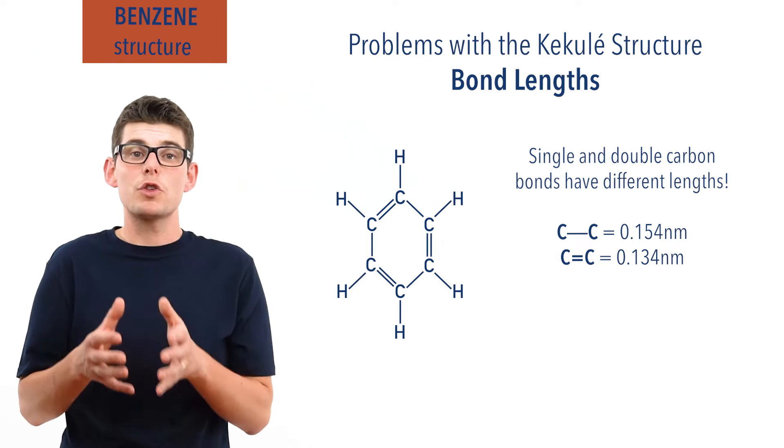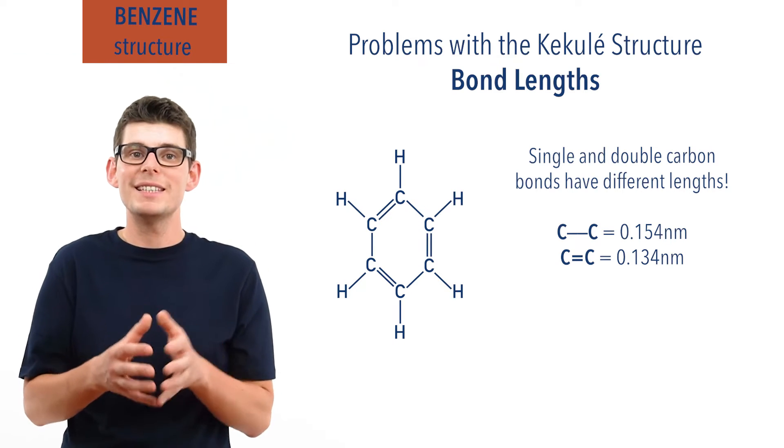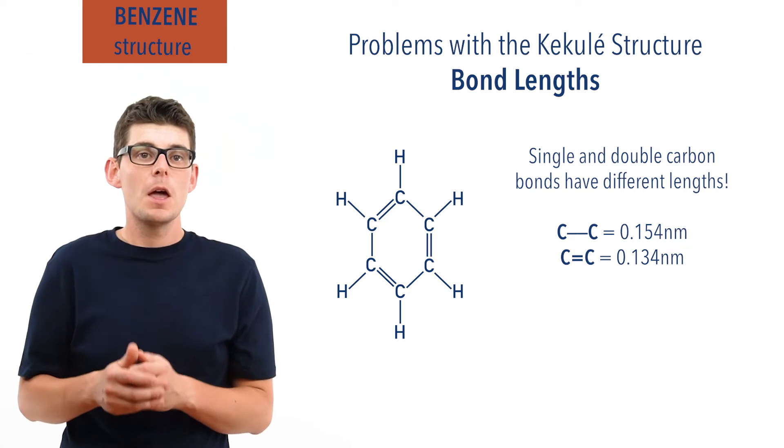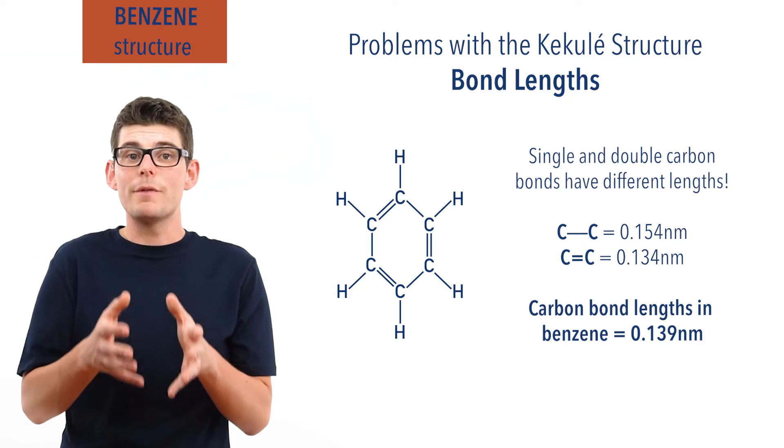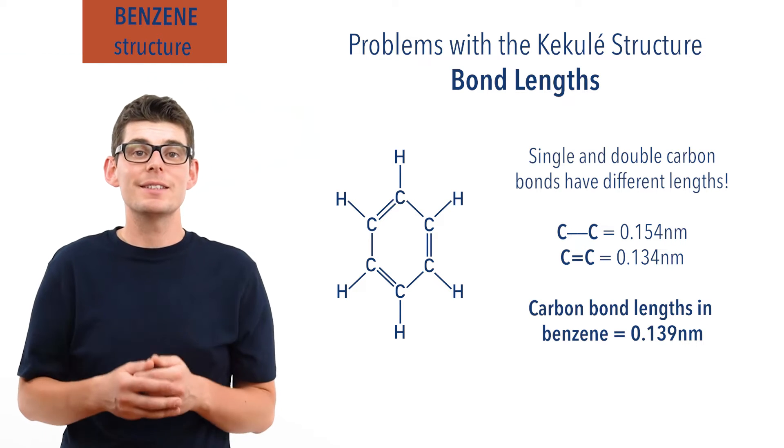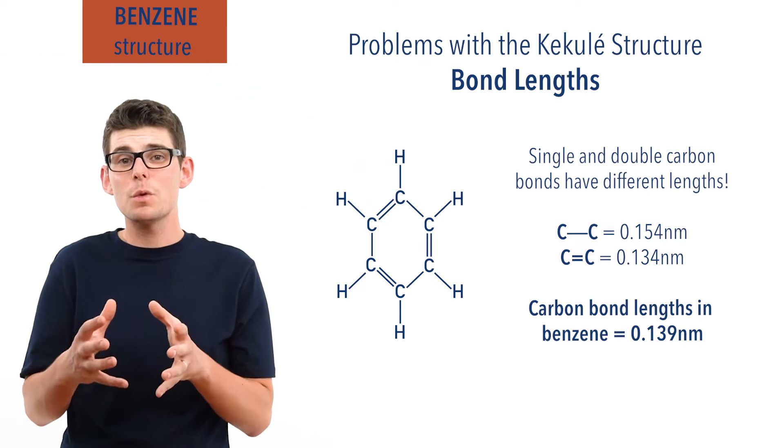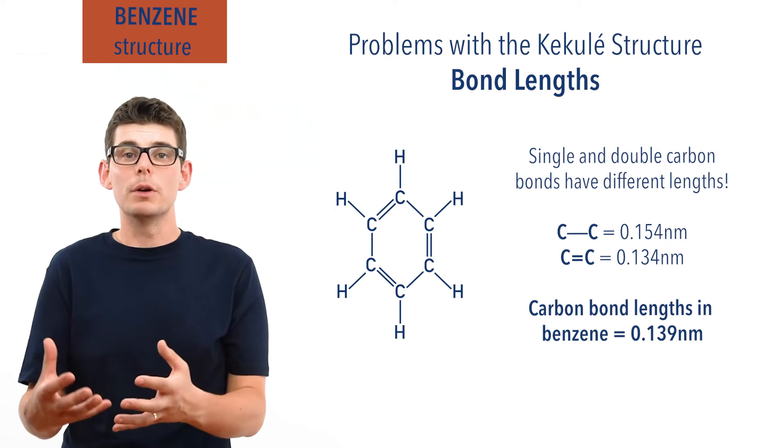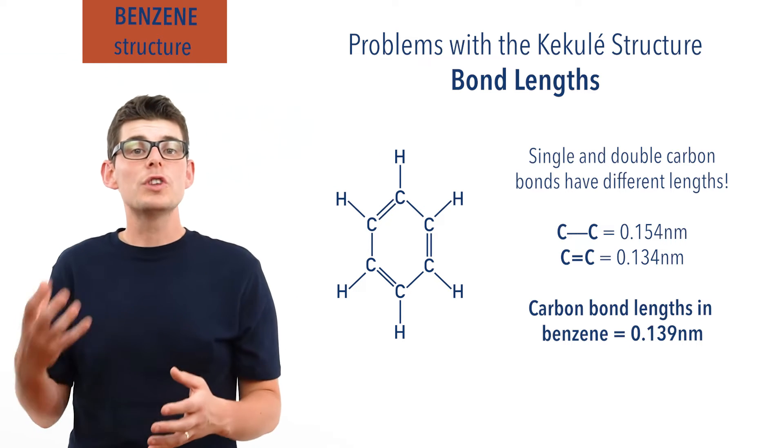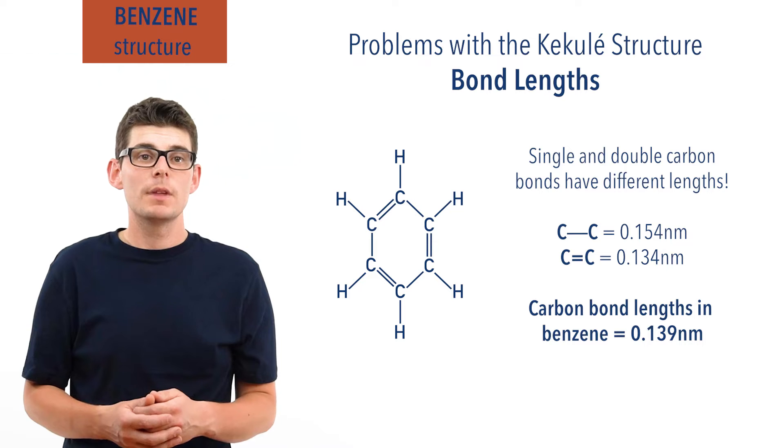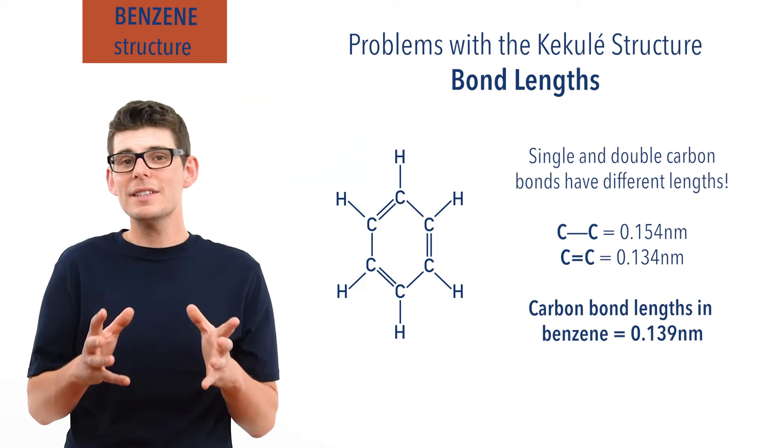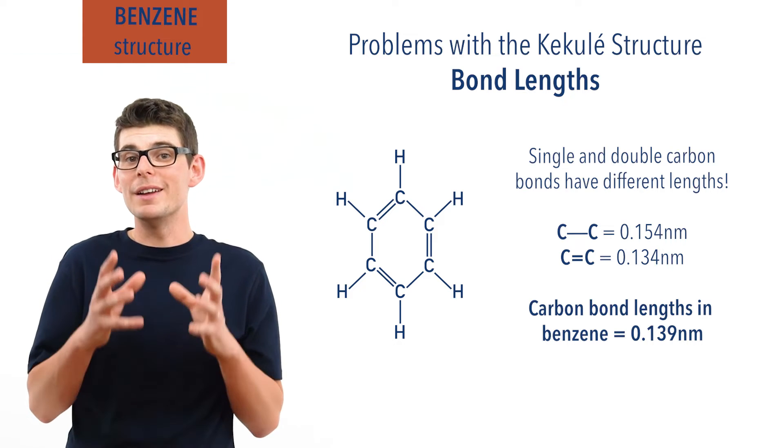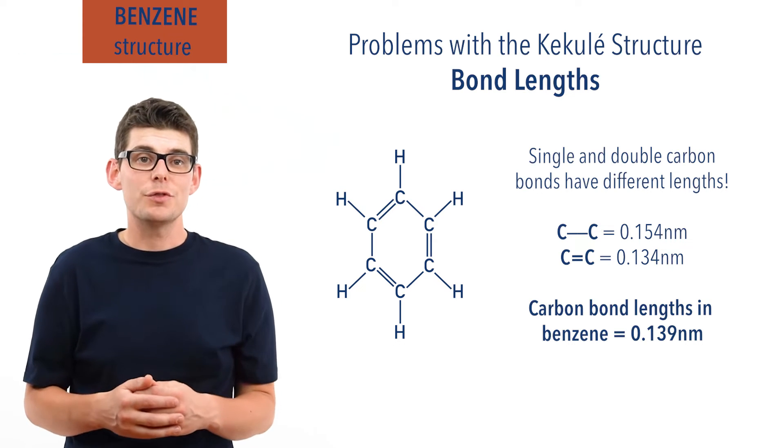X-ray diffraction experiments have shown that all the carbon bonds in benzene have the same bond length, about 0.139 nanometers. This is why the shape of benzene is a perfect hexagon, and yet poses the difficult question of why do the carbon bonds not match either the single or double carbon bond lengths. Surely they can only be single or double? We'll answer this question later after we've talked about another problem with the Kekulé structure.